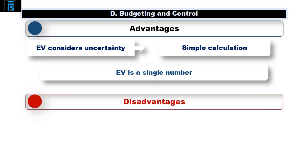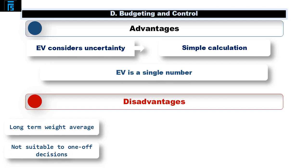There are also disadvantages associated with the expected value decision-making technique. It assumes the decision will have to be made again and again. The expected value approach to decision-making calculates the long-term weighted average value. Expected values should not, therefore, be applied to one-off decisions.